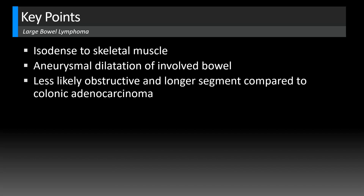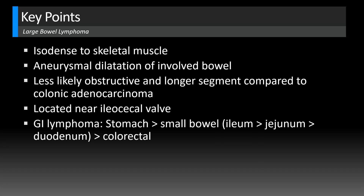Interestingly, lymphoma is less likely to be obstructive compared to other tumors, whether involving the colon or renal collecting system. It also tends to involve a longer segment compared to colonic adenocarcinoma, which tends to be more focal. When it involves the colon, it's often located near the ileocecal valve. Extranodal GI lymphoma is more common in the stomach and then the small bowel. When it involves the small bowel, the ileum is most commonly involved, followed by jejunum and then duodenum. Colorectal is actually the least common site.